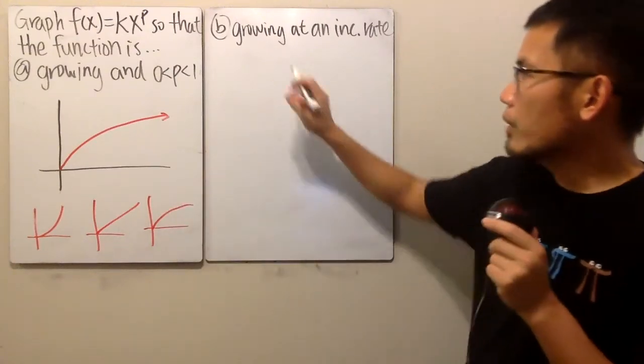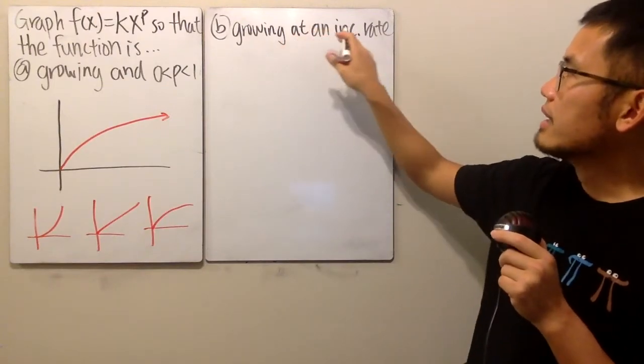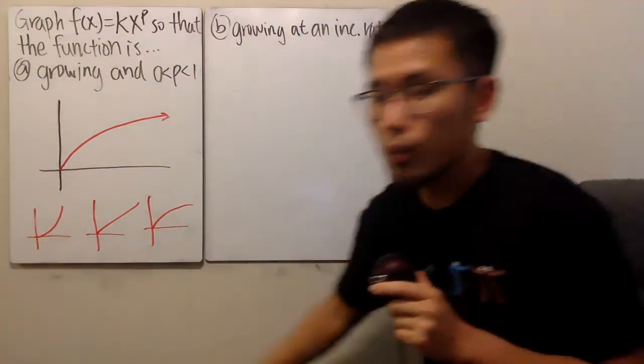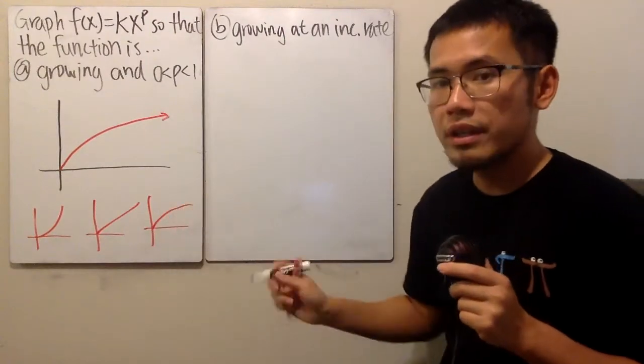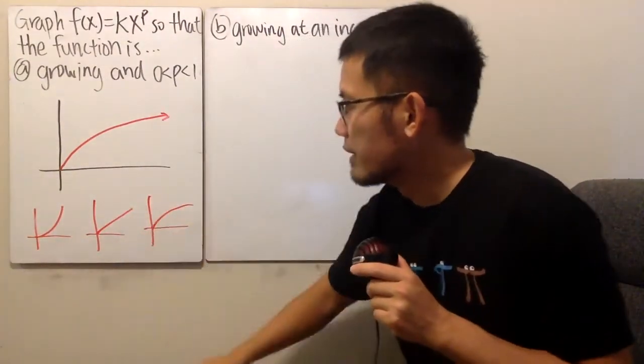The second part is we want the function to be growing but at an increasing rate. So which of these is growing at an increasing rate? It's this one. Remember,